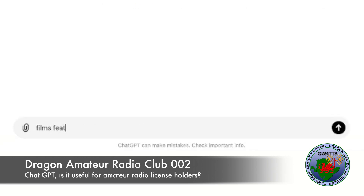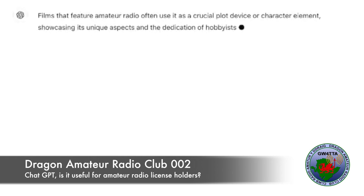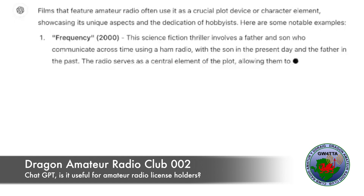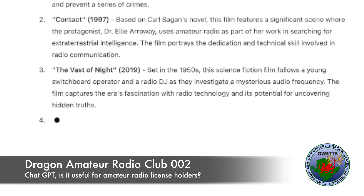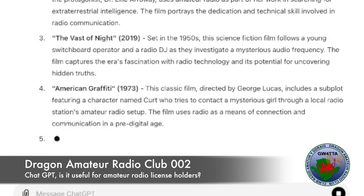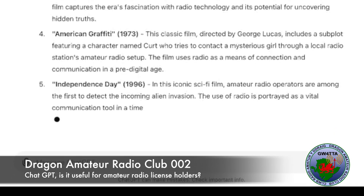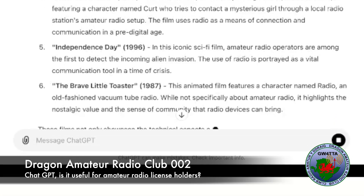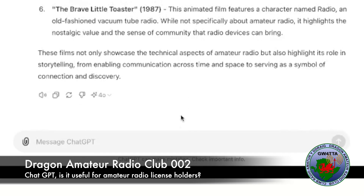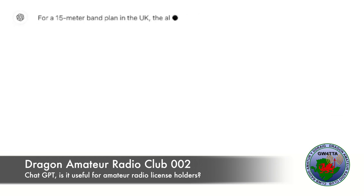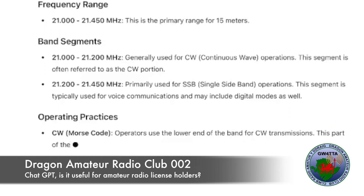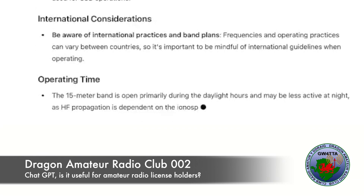All amateur radio operators like to watch films about amateur radio. So I'll ask ChatGPT and it will give you a list, including Frequency, Contact, The Vast of Night, American Graffiti, Independence Day and The Brave Little Toaster — films that showcase the technical aspects of amateur radio and highlight its role in storytelling. If you're out on a special event station and you need the UK band plan for the 15 metre band or any band, ask ChatGPT and it will give you the entire band plan, telling you what areas of the band you can and can't use.